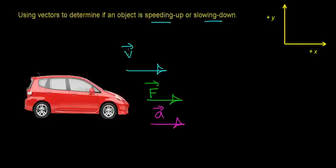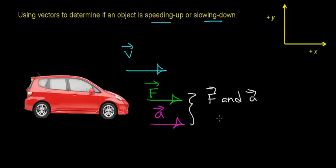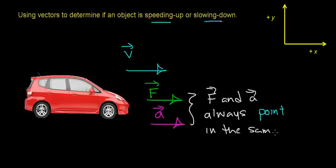So now what I've done is I've drawn three vectors: the velocity vector indicating the direction in which this object is initially moving, the force vector indicating the direction in which I have to apply a force in order to cause this object to speed up, and the acceleration vector. One thing you should notice is that by Newton's second law, the force vector and the acceleration vector always point in the same direction, because forces cause objects to accelerate in the direction of the net external force.